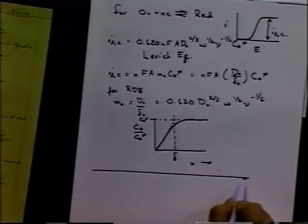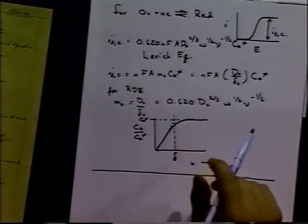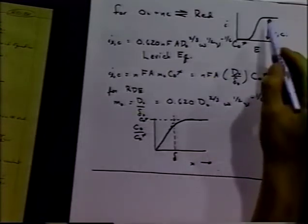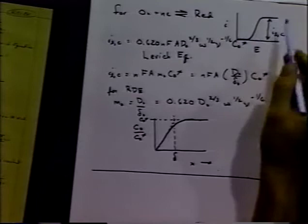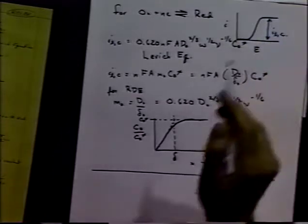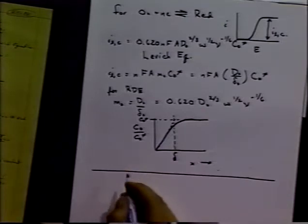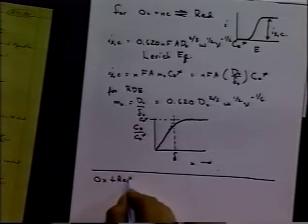Now that's for ox only present in the system, and that's for the limiting current—in other words we're on the top of the wave. So we don't have any electron transfer kinetics to worry about in that case. For the reversible case where both ox and red are present...